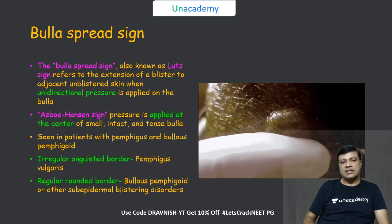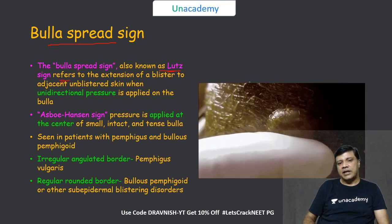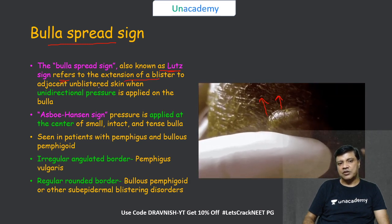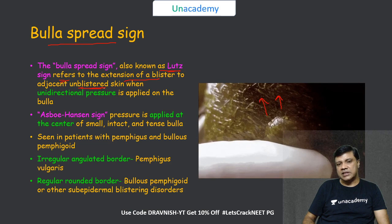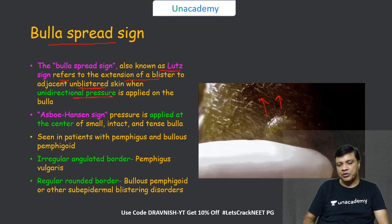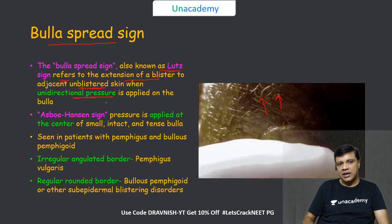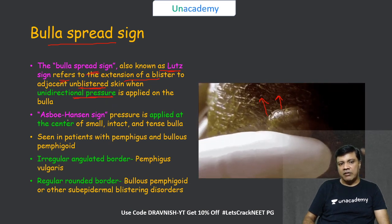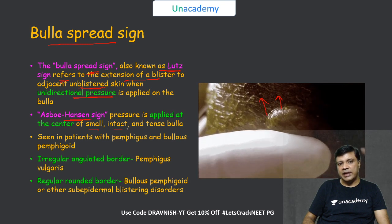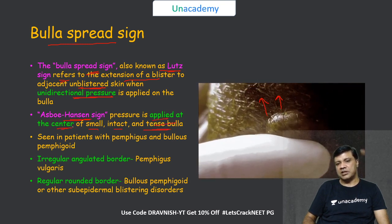The next sign is the bulla spread sign, also called the Lute sign. It refers to the extension of a blister over unblistered skin when unidirectional pressure is applied. In the Asboe-Hansen sign, seen in small intact or tense blisters, the pressure is applied at the top of the blister.